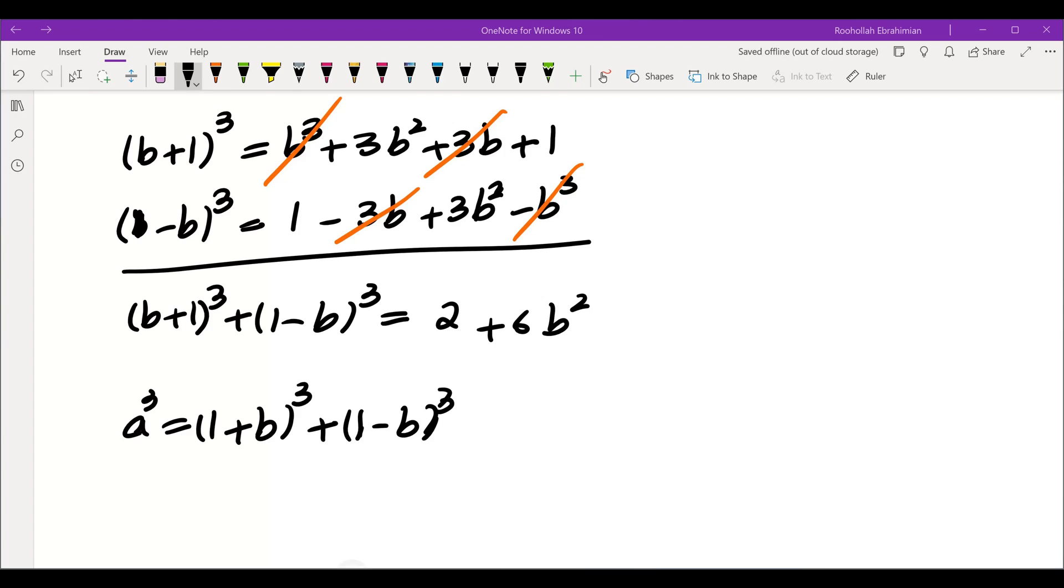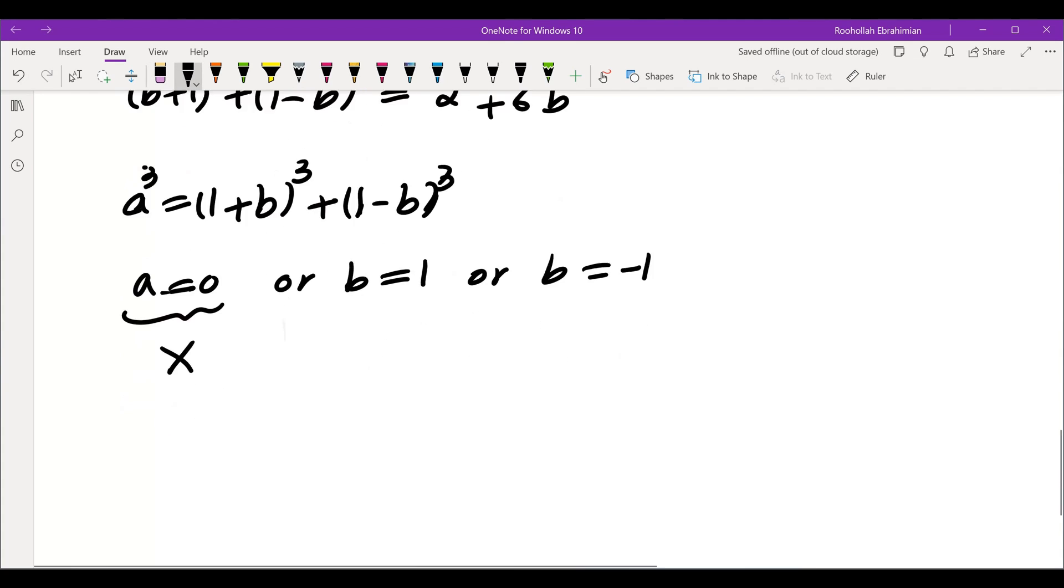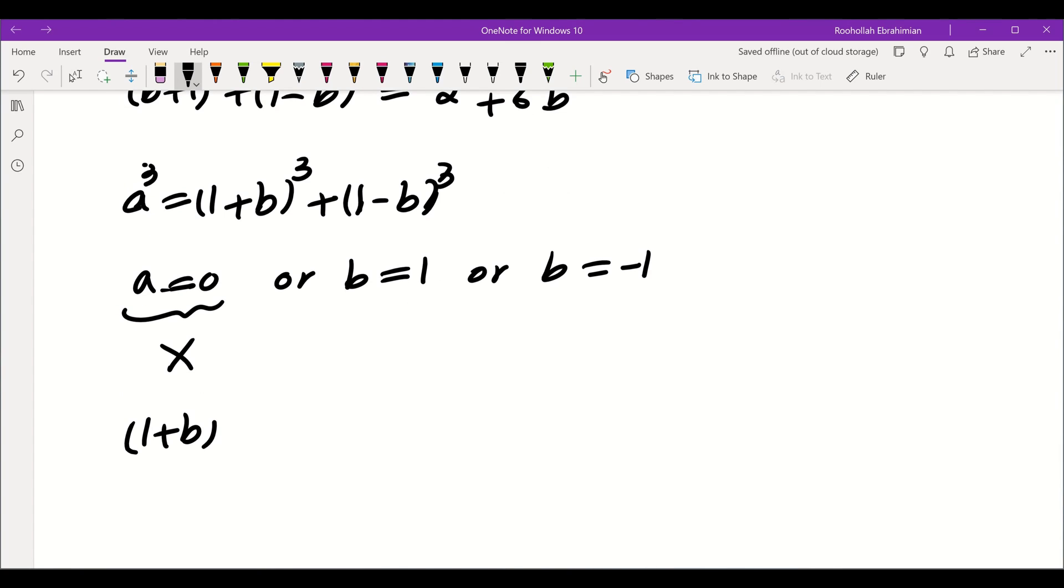which the Fermat's last theorem tells us either a is 0 or b is 1 or b is negative 1. And for each one of them, we'll be able to get to a solution. This one doesn't give us a solution, because that means 1 plus b cubed is equal to negative 1 minus b cubed, which would mean 1 plus b is equal to negative 1 plus b. That's not possible.